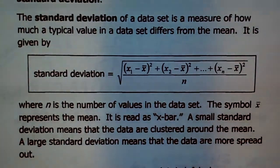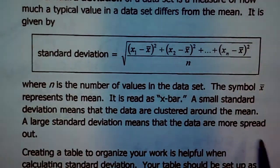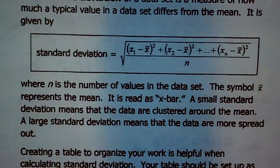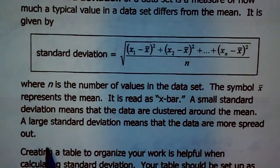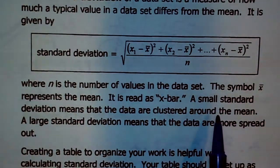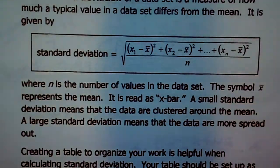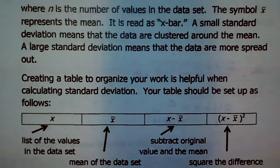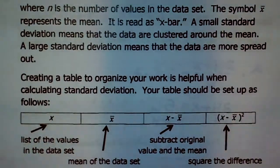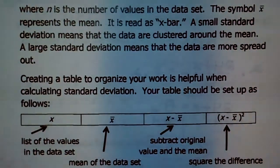A small standard deviation means that the data are clustered around the mean — they're pretty close to the average. A large standard deviation means the data are more spread out. So in terms of thinking about range: a small standard deviation means there's not really a great range, most are pretty close together; a large one means there's a bigger difference between the largest and smallest value.